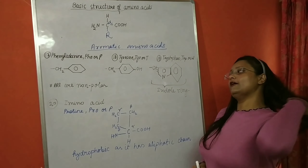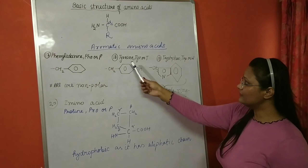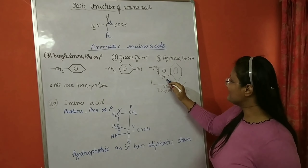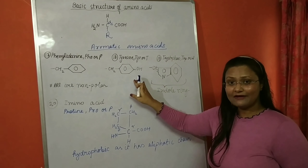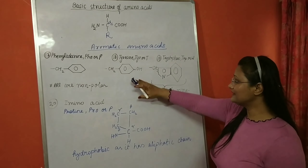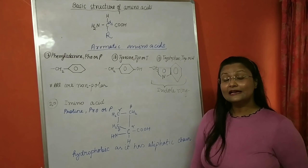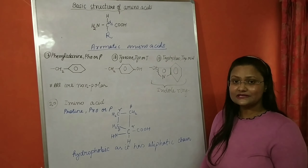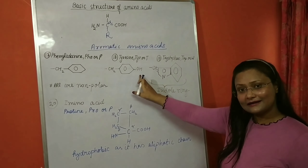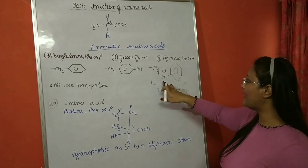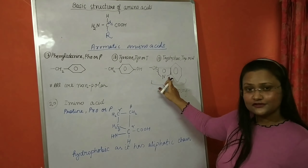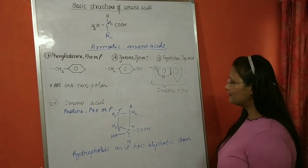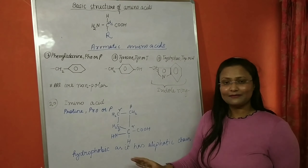All these aromatic amino acids are overall non-polar, but tyrosine has OH and tryptophan has NH on its indole ring, so these are slightly charged and slightly more hydrophilic than phenylalanine. Phenylalanine is completely hydrophobic as it has nothing that can dissolve in water. Tyrosine and tryptophan can dissolve slightly in water due to their OH and NH groups respectively, but overall they are non-polar.